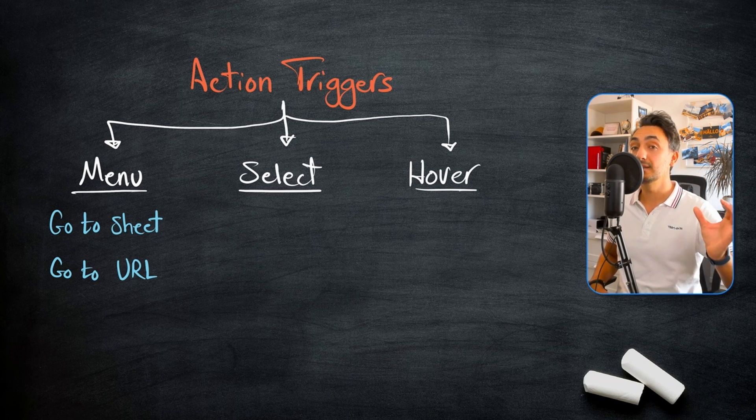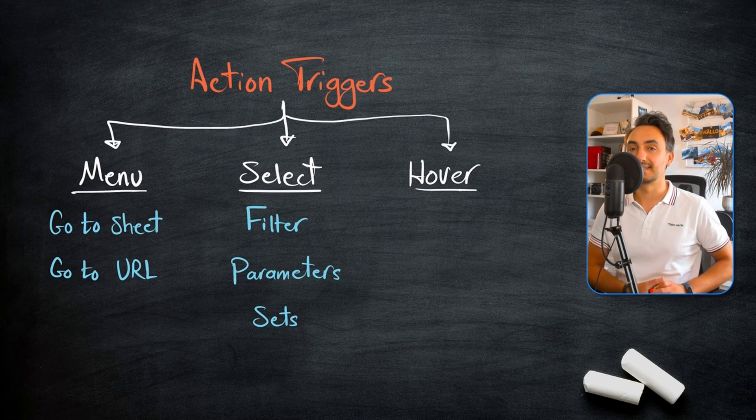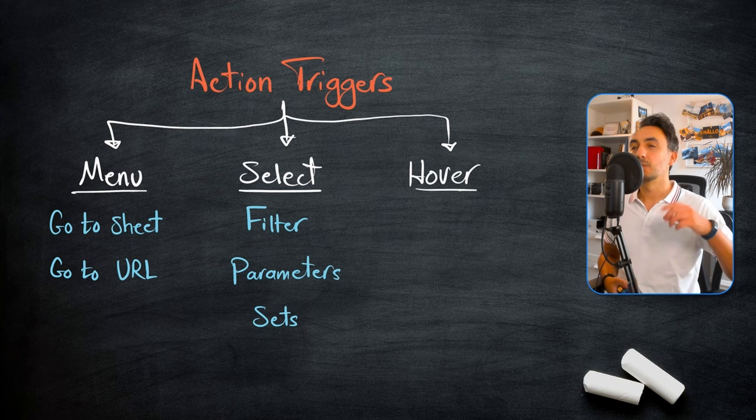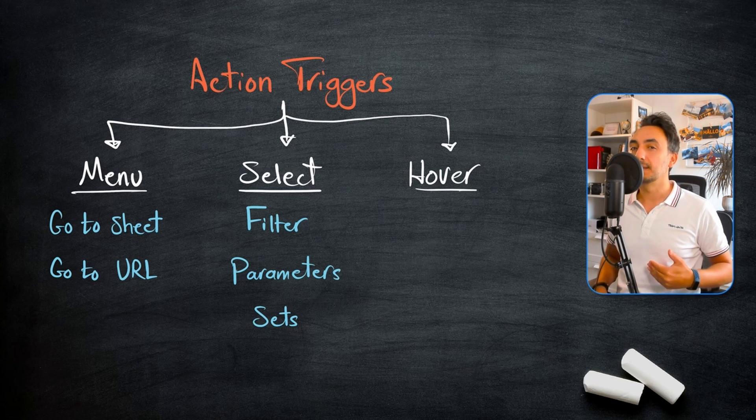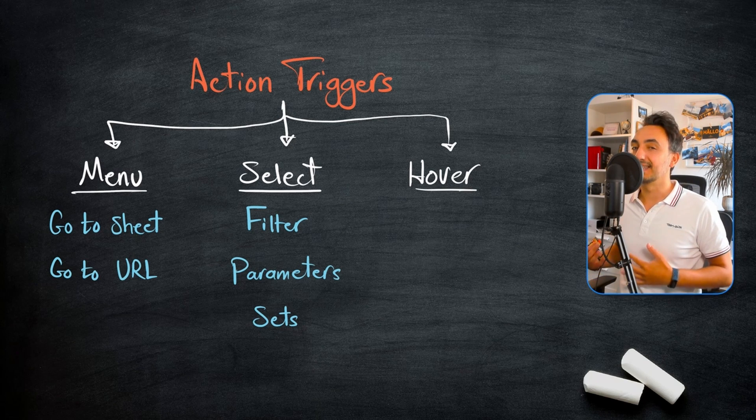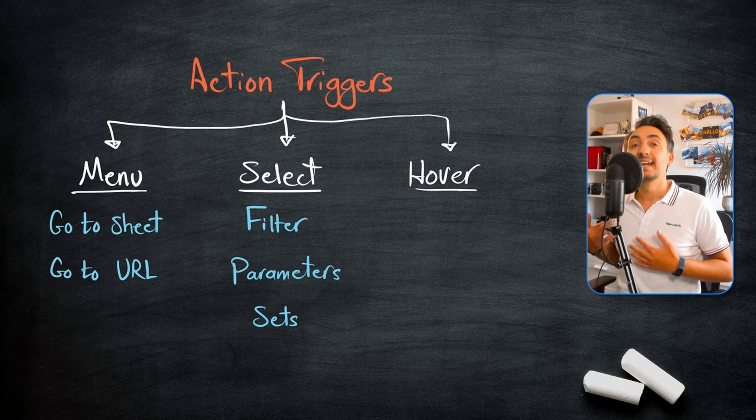If you are using filter action, the best way is to use select. It's more interactive. So once a user starts selecting from one worksheet, the other worksheet can be filtered. I usually go with select if I'm using the filter actions, and Tableau uses it as well as a default.